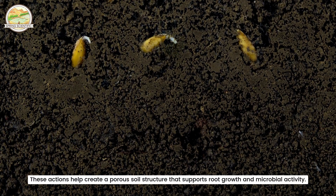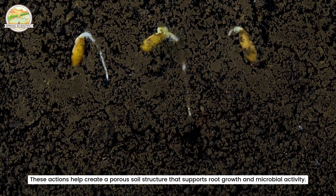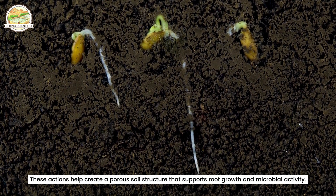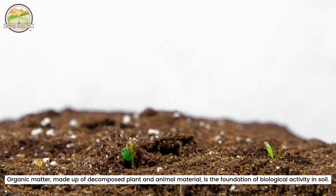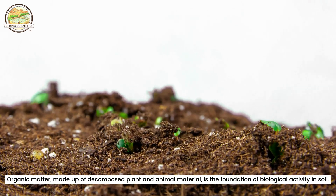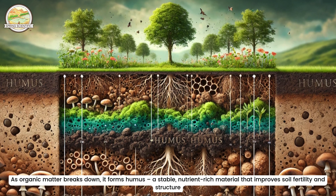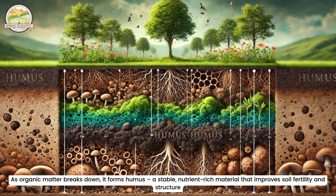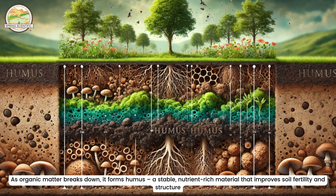These actions help create a porous soil structure that supports root growth and microbial activity. Organic matter, made up of decomposed plant and animal material, is the foundation of biological activity in soil. As organic matter breaks down, it forms humus, a stable, nutrient-rich material that improves soil fertility and structure.